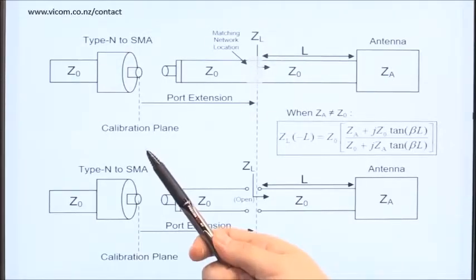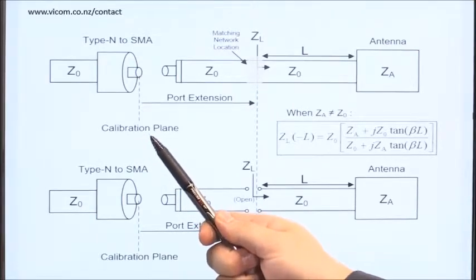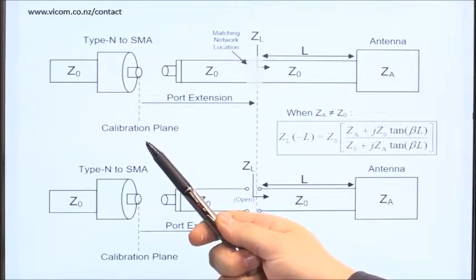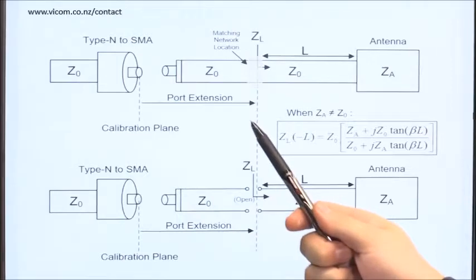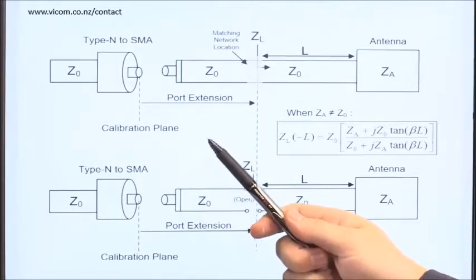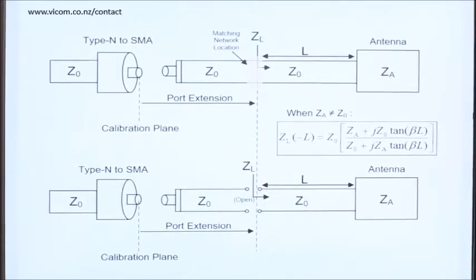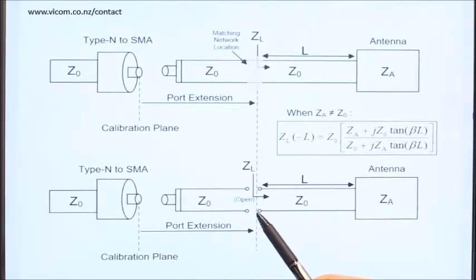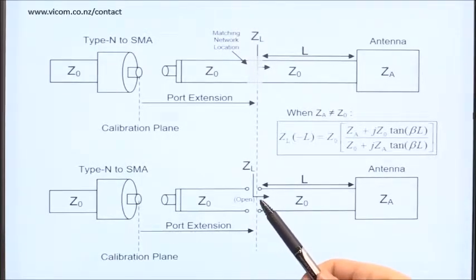Now that we've properly calibrated at the end of the type N to SMA connector, now we need to apply a port extension. And to do so, I've conveniently included an equivalent trace on my test board with an open located exactly where the matching network is to be placed.